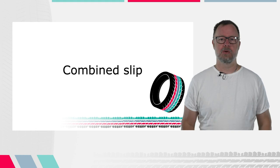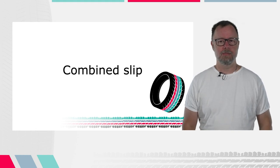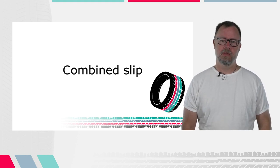The topic of this video is combined slip. Combined slip occurs when mechanical displacement is present in both the lateral and the longitudinal directions. For example, this will occur when you need to brake while cornering.